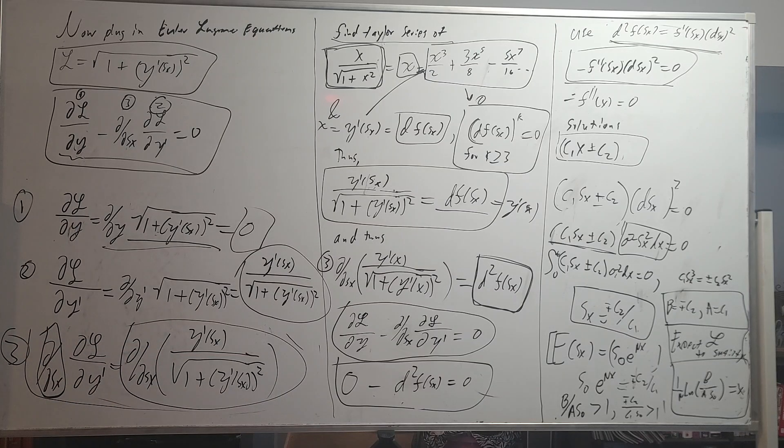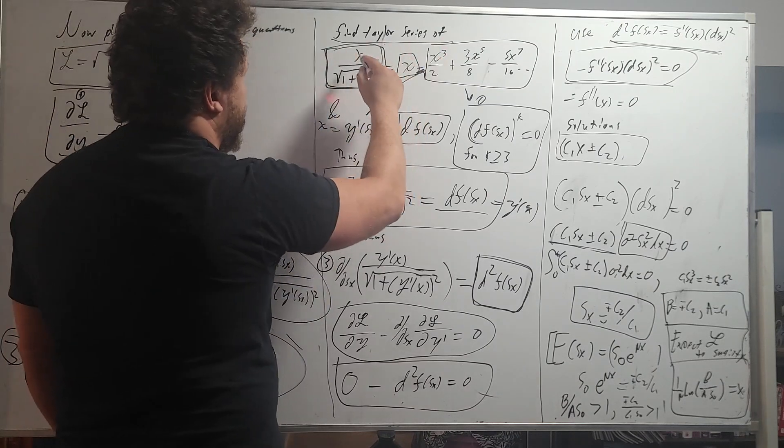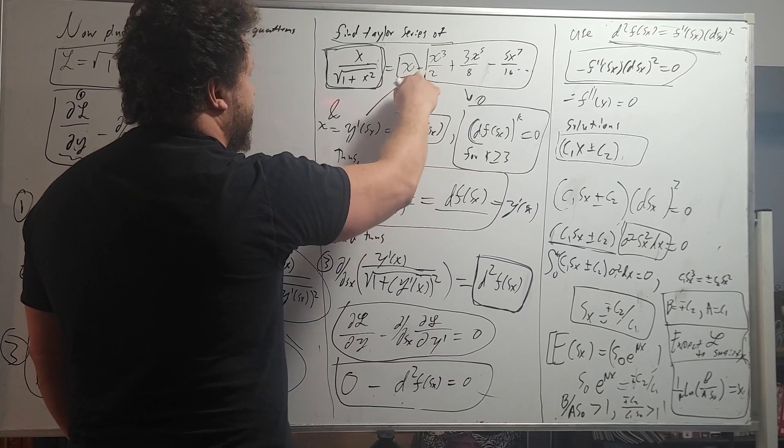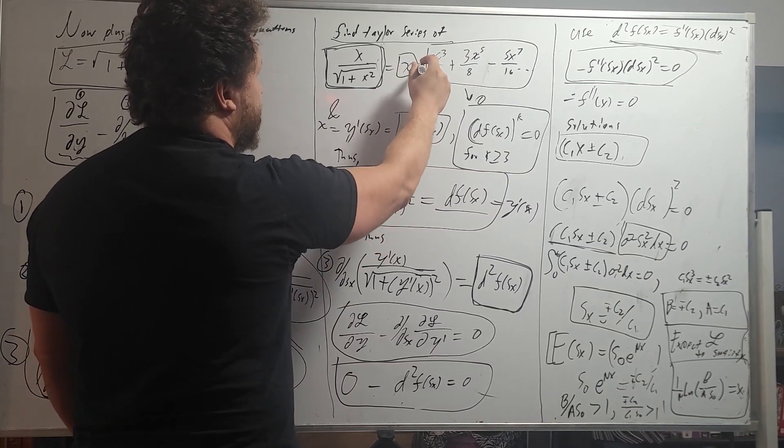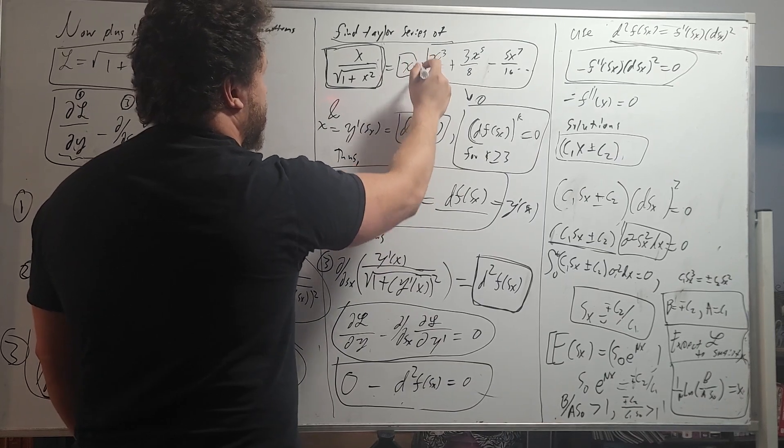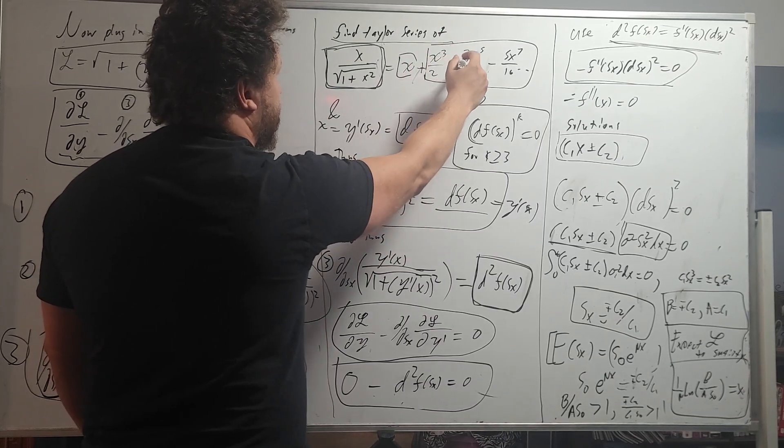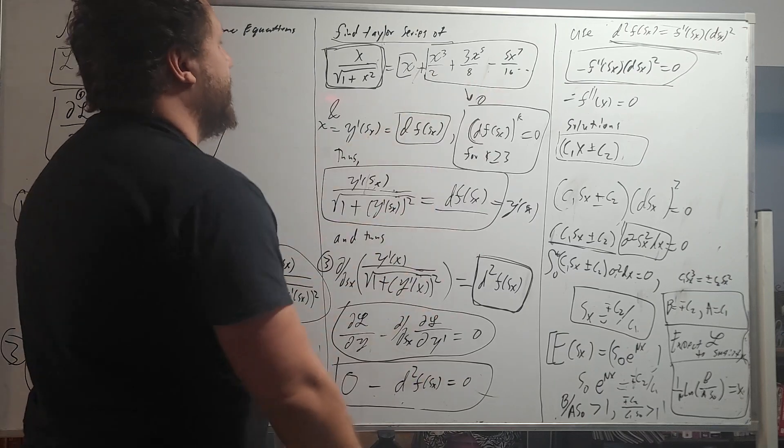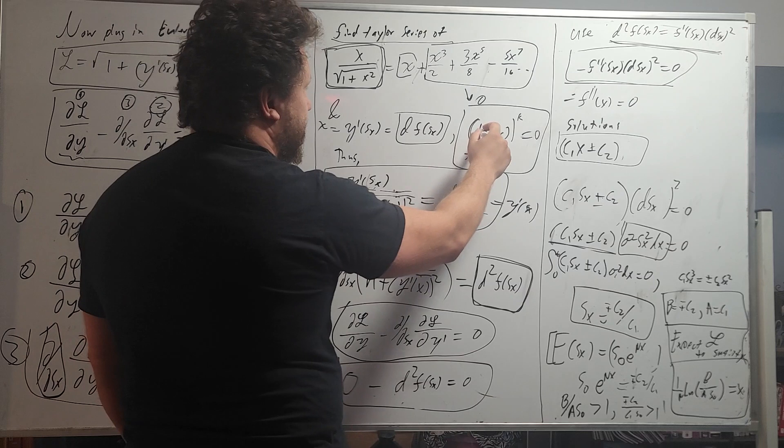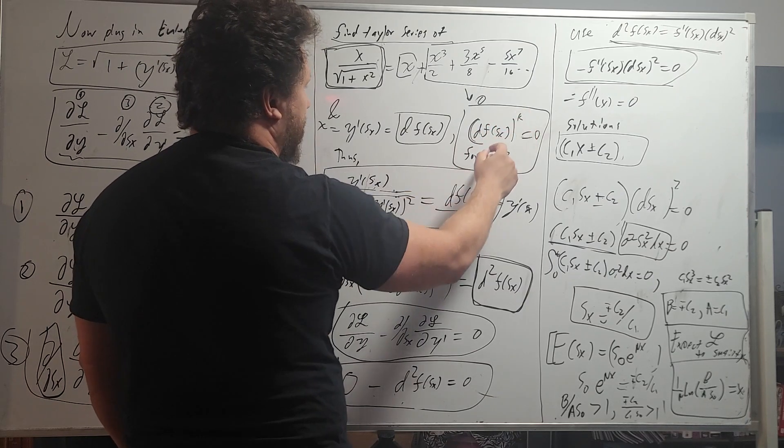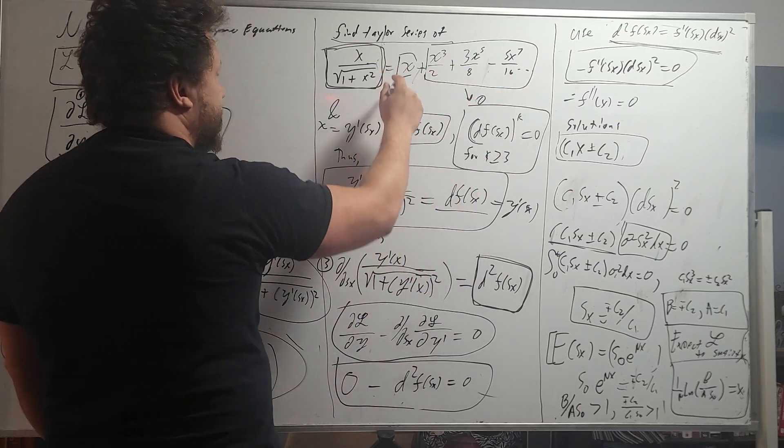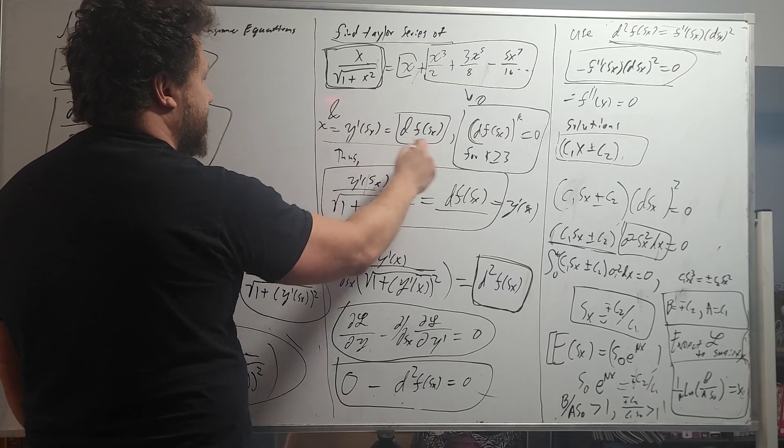And now we need to find the stochastic derivative of that. We need to employ the help of the Taylor series here, because it does become quite complicated. So find the Taylor series of x divided by square root 1 plus x squared. And we find that this is actually the Taylor series: x plus x cubed divided by 2 plus 3x to the 5 divided by 8 minus 5x7 divided by 16, so on and so forth into infinity.